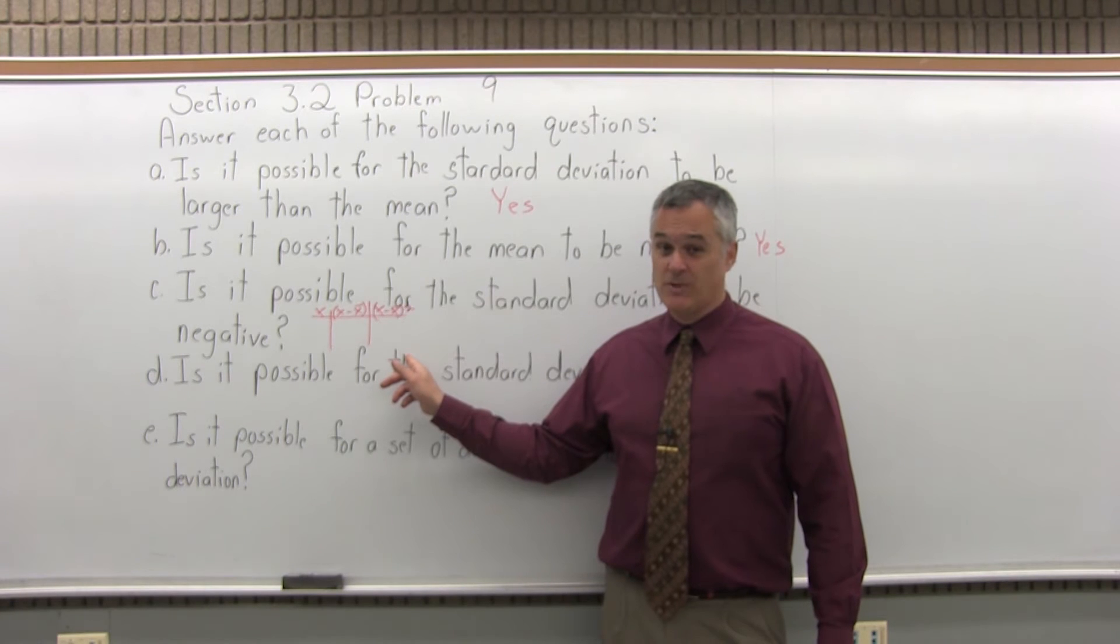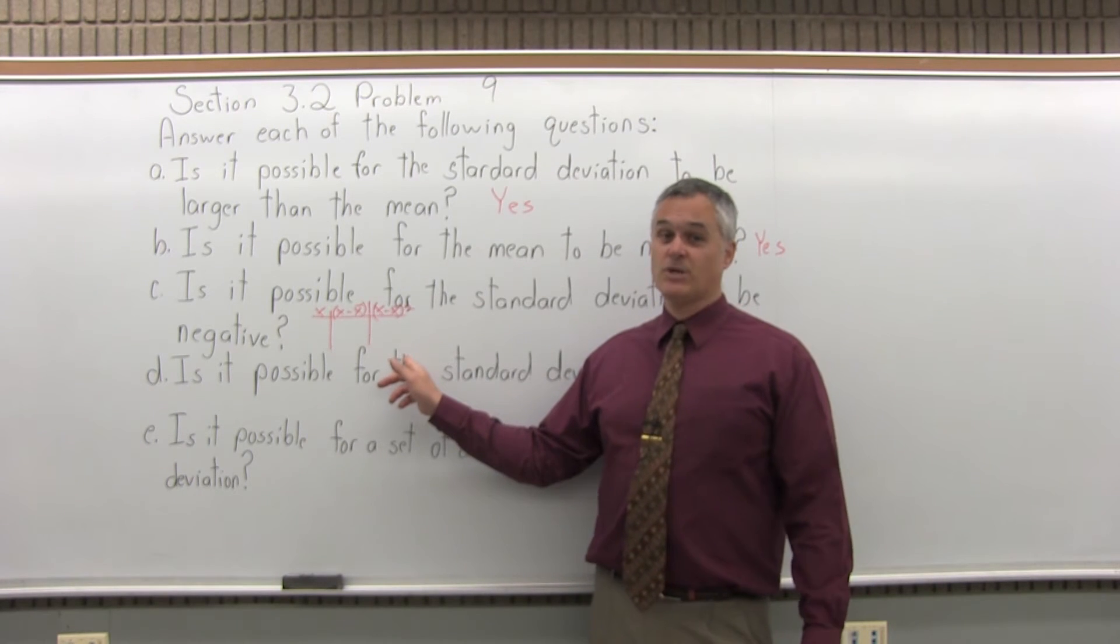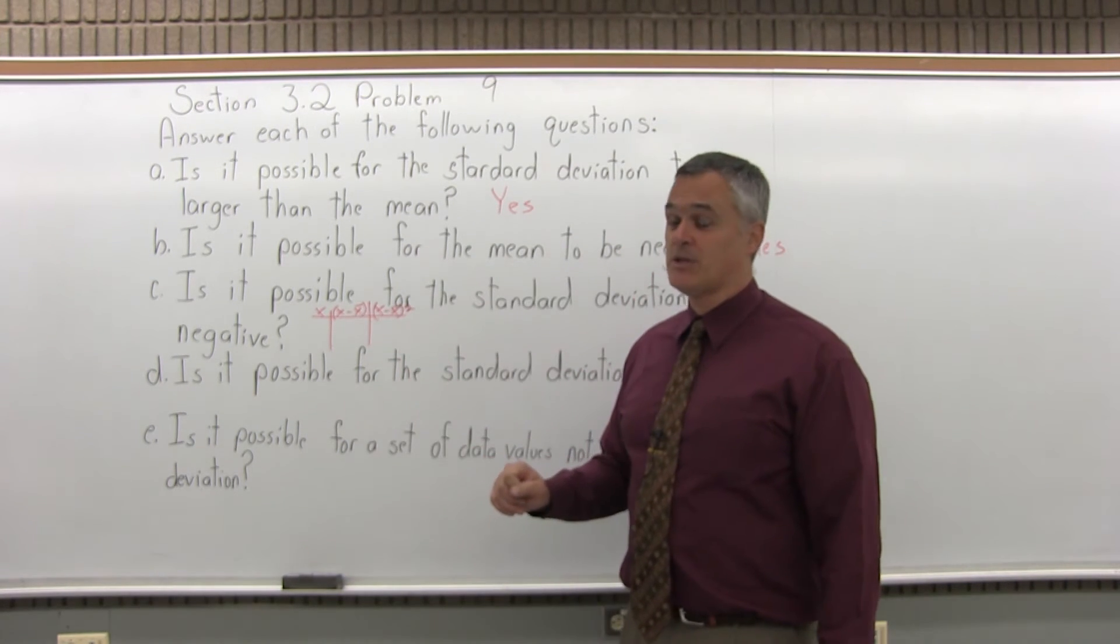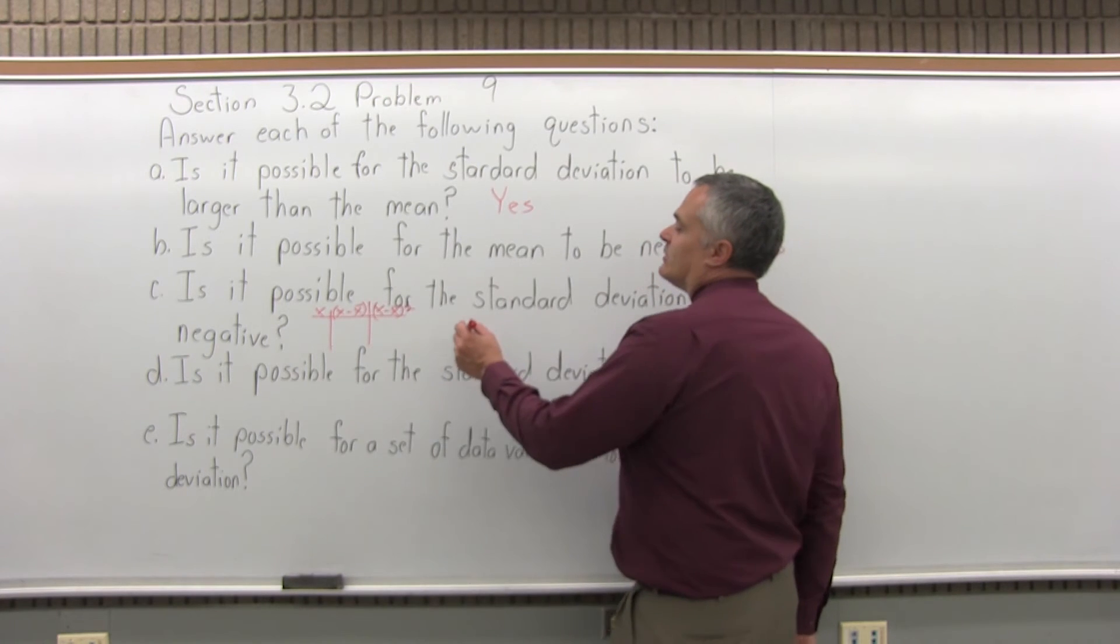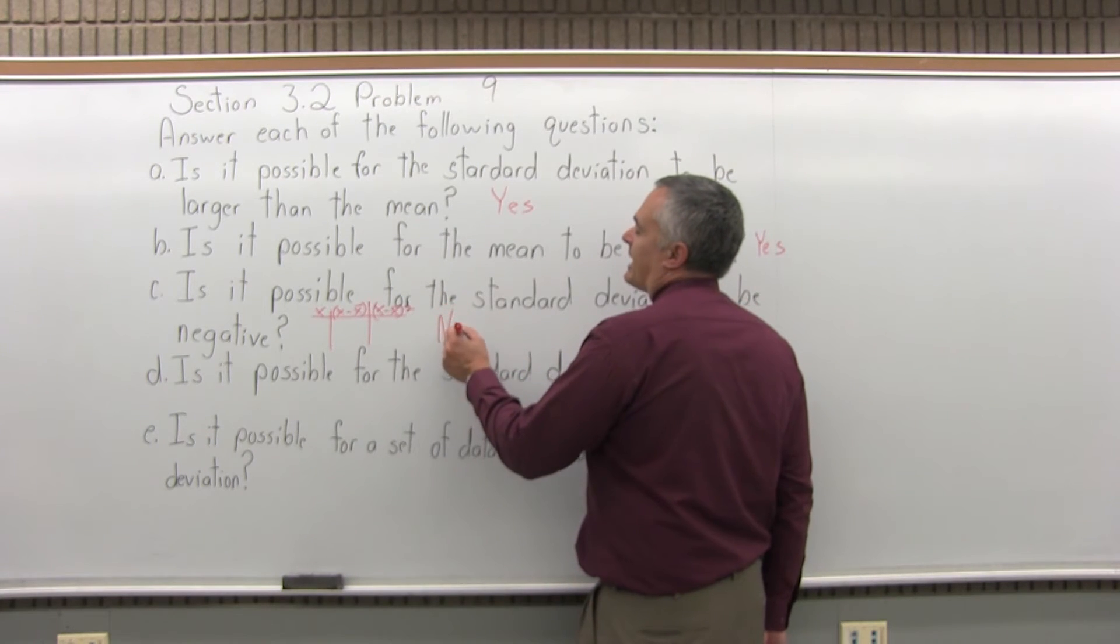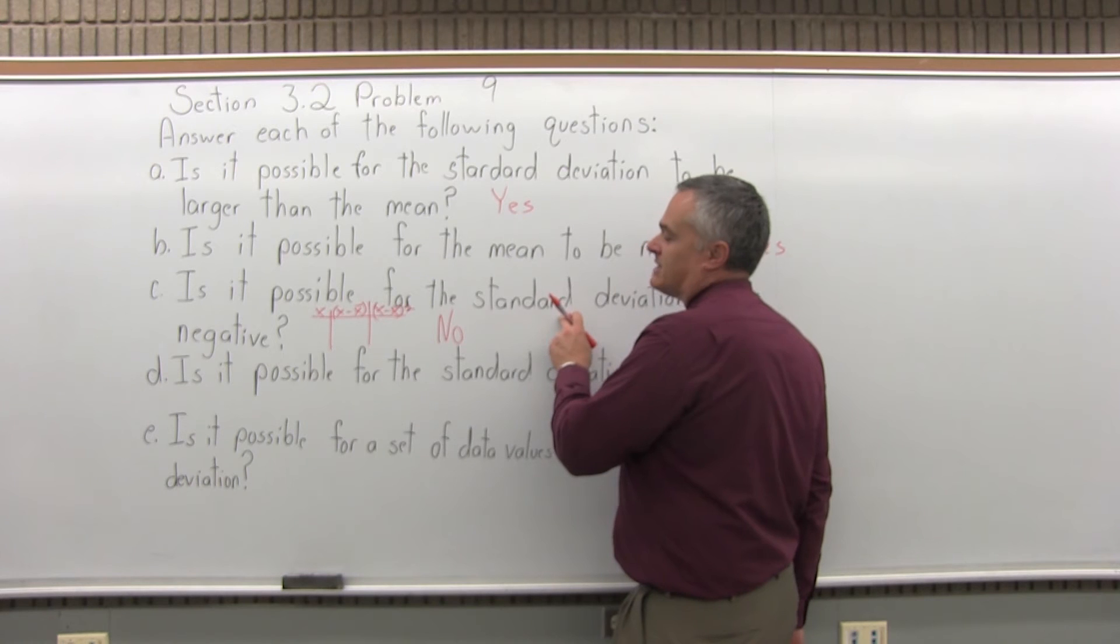you get a total of that second column and divide by either n or n minus one depending on whether you have a sample or a population. Your standard deviation will never be negative. So the answer is no. Is it possible for the standard deviation to be negative? No, it's not.